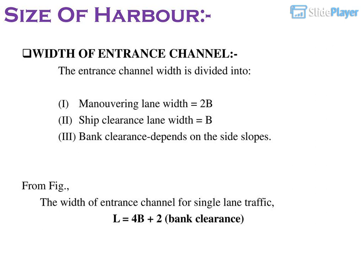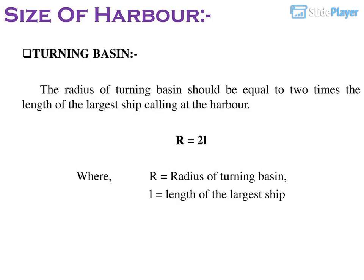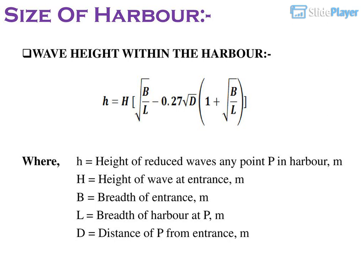Width of entrance channel is divided into: manoeuvring lane width = 2B; ship clearance lane width = B; bank clearance depends on side slopes. The width of entrance channel for single lane traffic L = 4B + 2 × bank clearance. Turning basin: The radius of turning basin R = 2L, where L is the length of the largest ship. Wave height within the harbour: H (reduced wave height at point P) where H = height of wave at entrance M, B = breadth of entrance M, L = breadth of harbour at P, D = distance of P from entrance M.